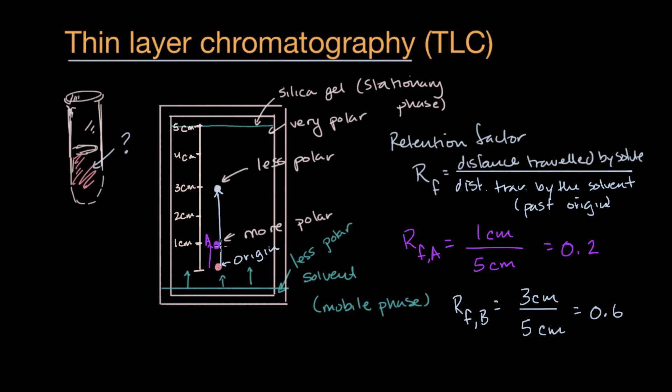So notice, in this situation, the more polar substance had a lower retention factor than the less polar substance. That makes sense because our stationary phase is more polar than our solvent, and so the things that are more polar were harder to move by the less polar solvent.